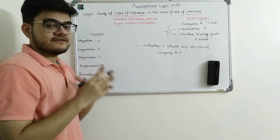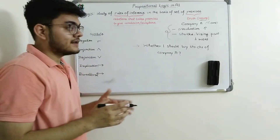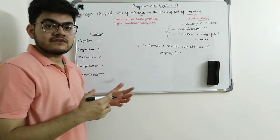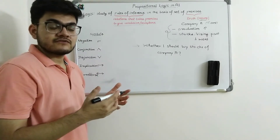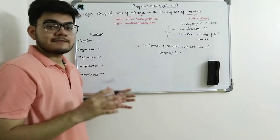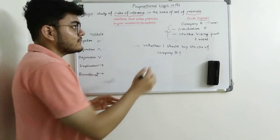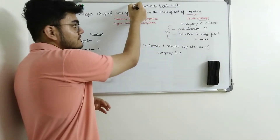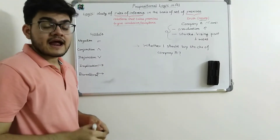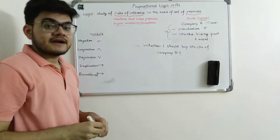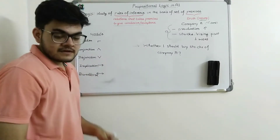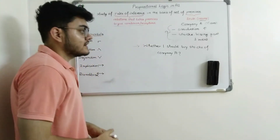Logics are of different types: mathematical logic, propositional logic, predicate logic, formal logic, informal logic — there are various types. In AI, we will be concerned about propositional logic and predicate logic. In this tutorial, I am just going to cover propositional logic.